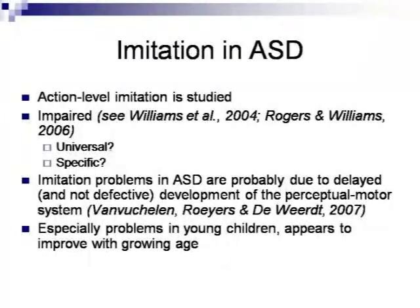We have carried out quite some research on imitation in the last few years, and it is our conviction that imitation problems in autism are probably due to a delayed — and not a defective — development of the perceptual motor system. When we look at imitation problems in children with autism, they look like the problems we see in younger children, so it is a less mature form of imitation in quite some cases. We especially see problems in young children, and imitation skills appear to improve when children grow older.